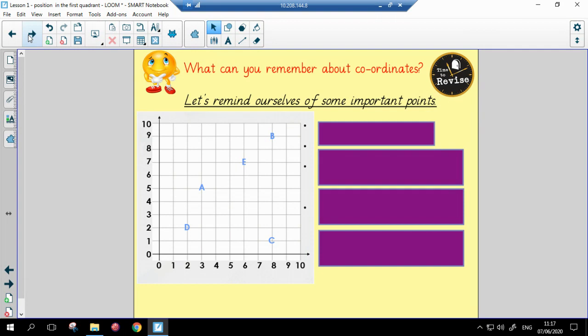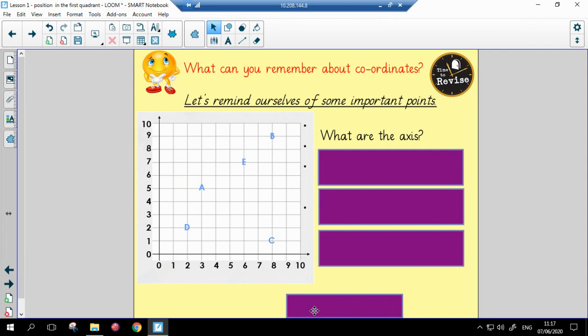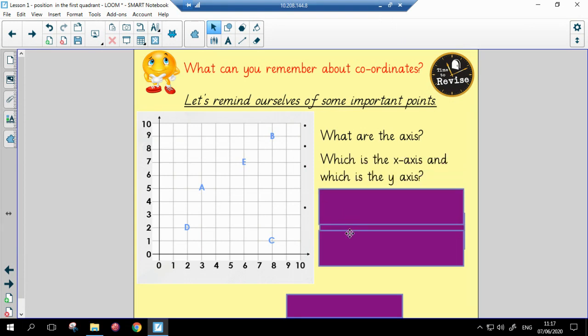Okay, so let's remind ourselves of some important points. The grid will always have an axis. The axes are the main lines here and here, and they are numbered or lettered depending on the axis.